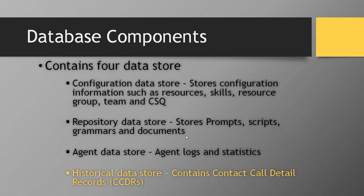The next one is the historical data store, which contains the contact call detail record. Once the agent finishes a call, all resources that were utilized are released and UCCX writes the contact call detail record to the historical data store. At a later point in time, this information can be retrieved from reporting clients such as the historical reporting client and CUIC from any workstation by the historical reporter.